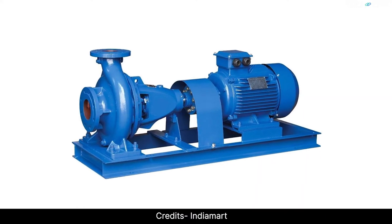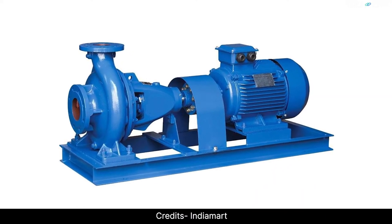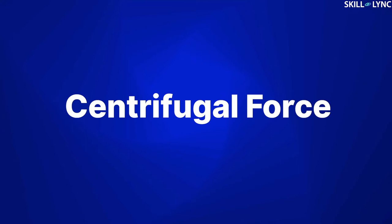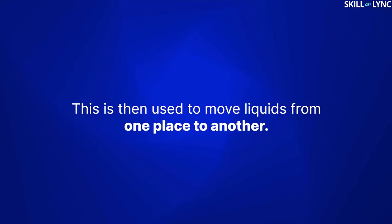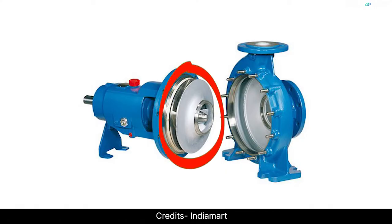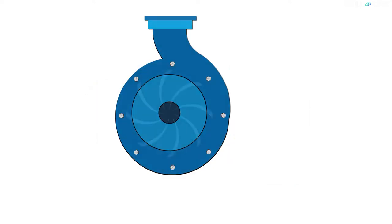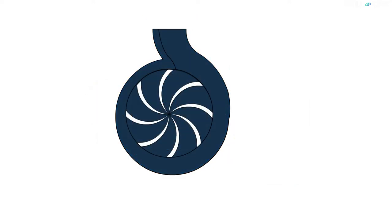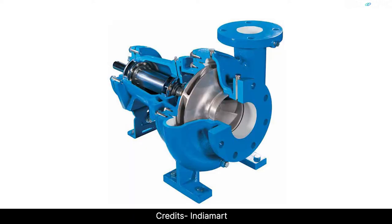In this video, we will be talking about a very specific type of pump called the centrifugal pump. A centrifugal pump uses centrifugal force to generate a pressure difference, which is then used to move liquids from one place to another. The centrifugal force required to move the liquids is generated by a component called an impeller. The impeller consists of radial vanes which extend into the impeller body.